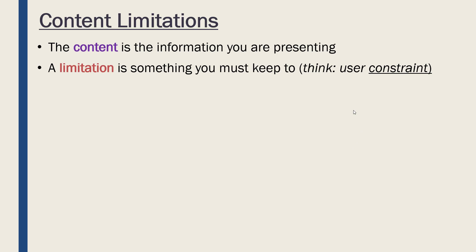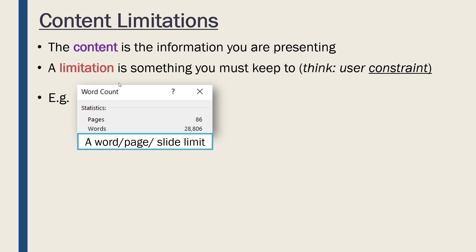Thinking way back to LO1, look at user constraints. A content limitation is the same idea as a constraint — we can't break it, we are limited to some limitation. So for example, you might be limited in your presentation in terms of a word limit, a page limit, or a slide limit. If you are submitting coursework at university there'll be some limit on your word count, and maybe there's only a limited amount of time to do a presentation, so maybe there are only 15 slides you are allowed to make. Clearly that's going to affect how you present it because you need to cram your information to a limit.